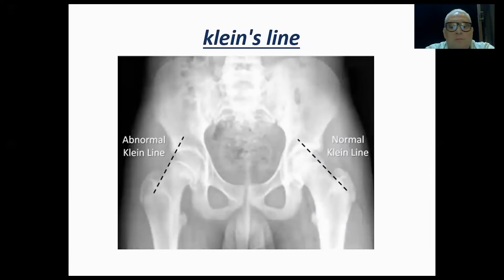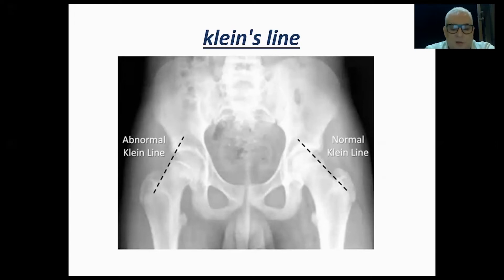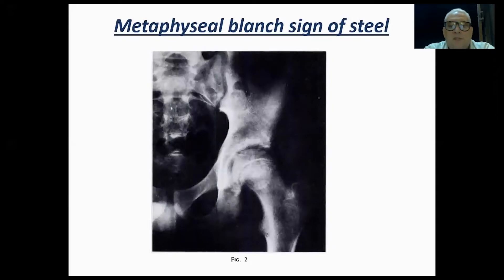The Klein's line on the AP view is a line parallel to the upper lateral part of the femoral neck. It needs to intersect part of the epiphysis; if it is tangential, this indicates slippage on the AP view. On the lateral view, slippage will be obvious. The metaphyseal blanch sign of Steel: you can see a white shadow in the metaphysis due to retroversion of the head and overlap between the epiphysis and the neck, making it more dense. You can also see that the physis itself is thinner than the other side.